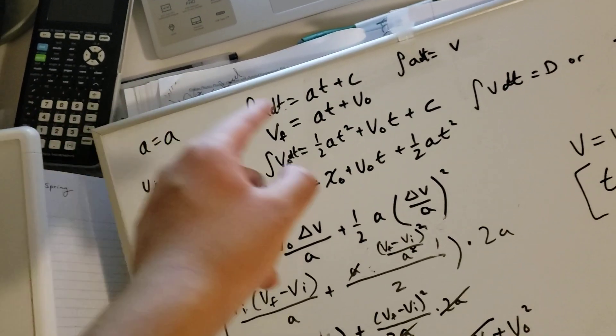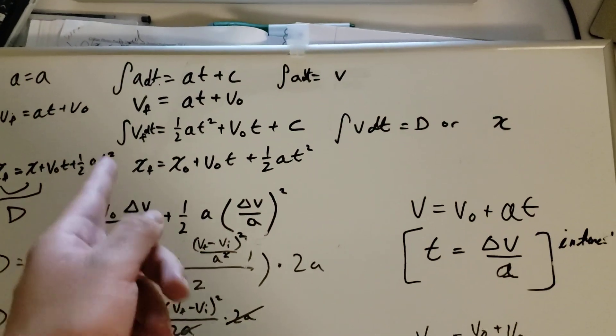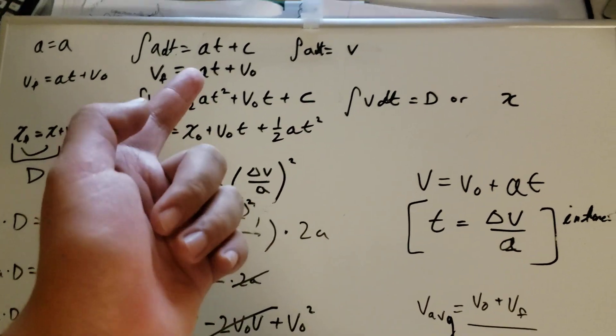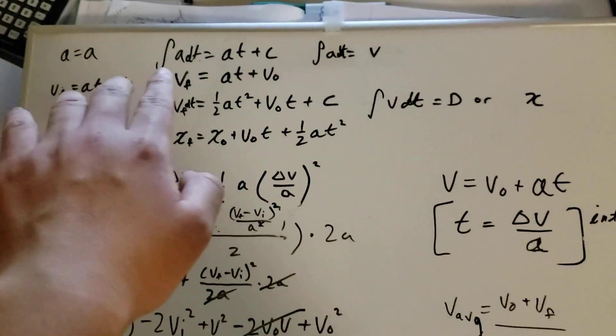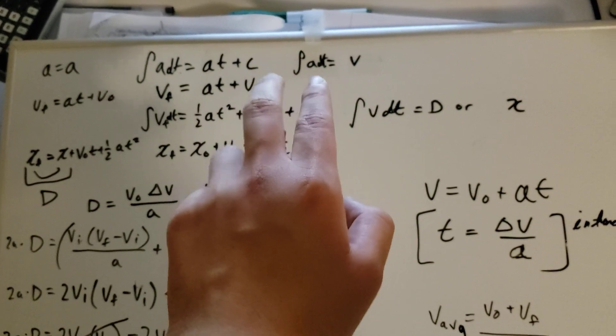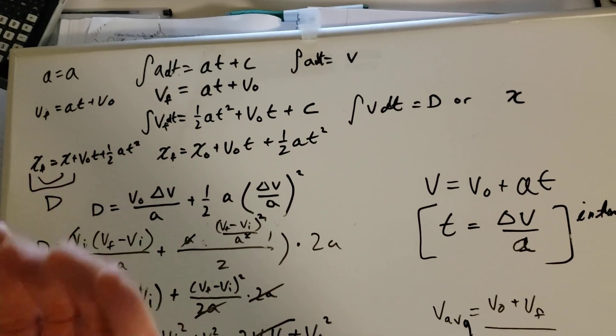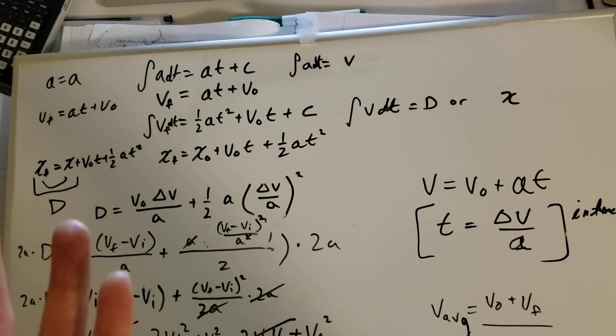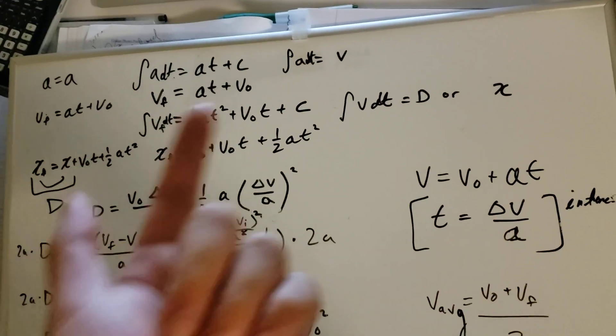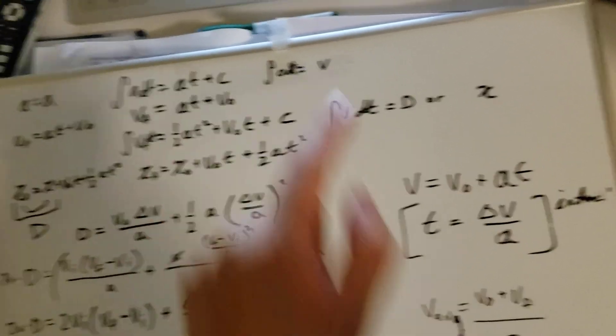Here it is: a equals a, which is the acceleration. The integral of a dt equals at plus c, which becomes v, because the integral of a dt equals v. Acceleration is basically the change in velocity, so if you take the derivative of v, you should get a.